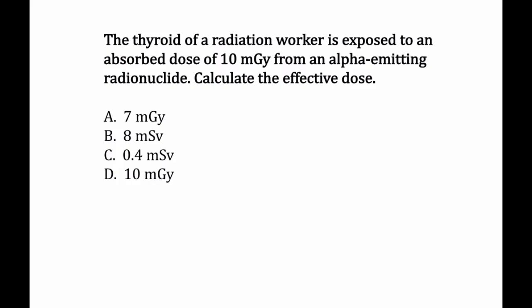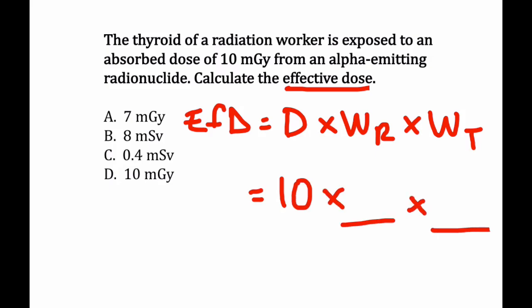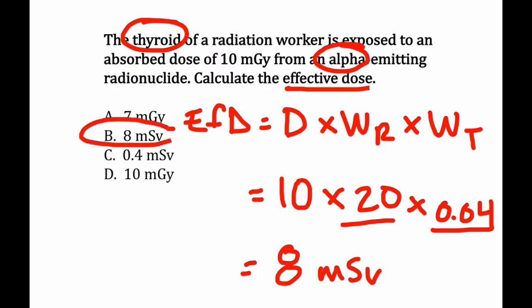Here's a more complex question. The thyroid of a radiation worker is exposed to an absorbed dose of 10 milligray from an alpha-emitting radionuclide. Calculate the effective dose. The formula is: effective dose equals absorbed dose multiplied by the radiation weighting factor multiplied by the tissue weighting factor. The absorbed dose is 10 milligray. The radiation weighting factor for alpha particles is 20. The tissue weighting factor for the thyroid is 0.04. So: 10 times 20 times 0.04 equals 8 millisieverts — answer B.